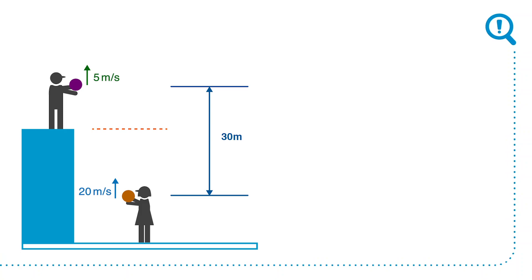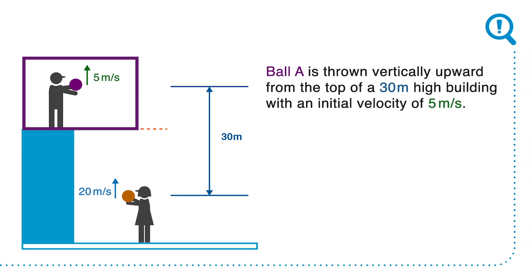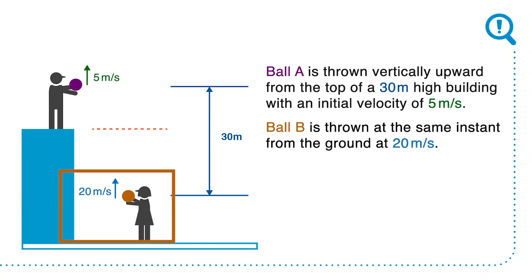So I have two people, one on the ground and one on top of a building. This person has ball A, and ball A is thrown vertically upward from the top of a 30 meter high building with an initial velocity of 5 meters per second. On the other side, I have ball B, and she's throwing the ball up at 20 meters per second from the ground.